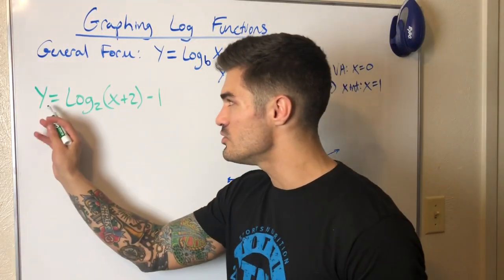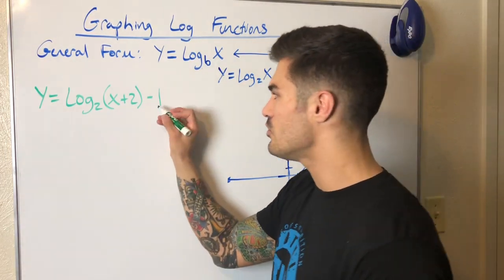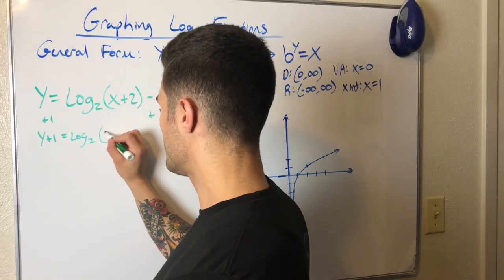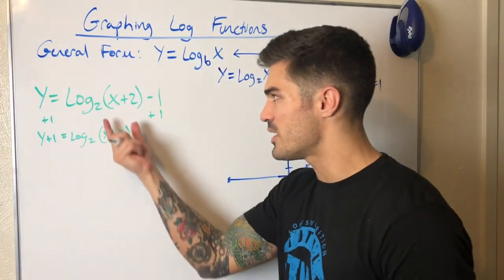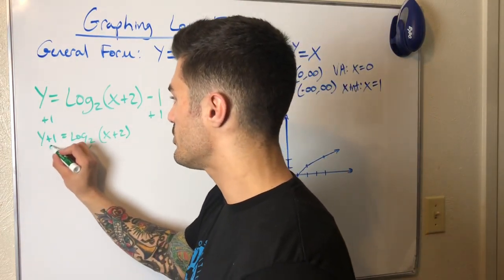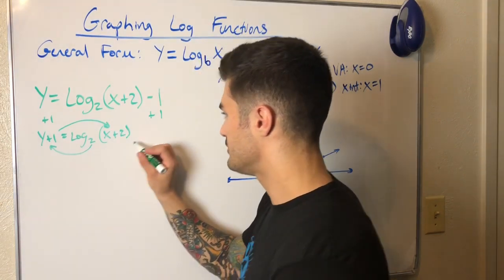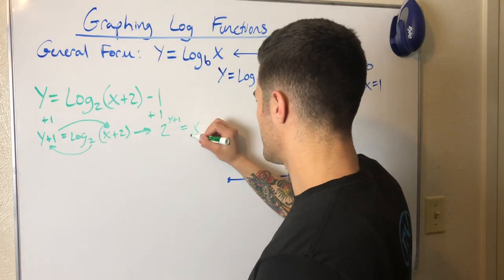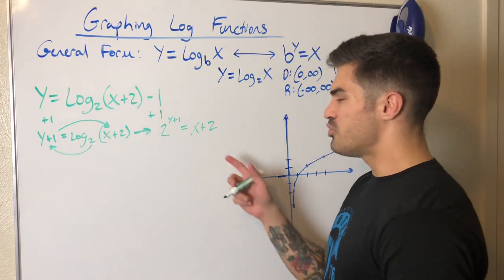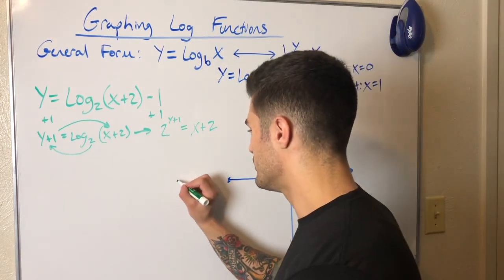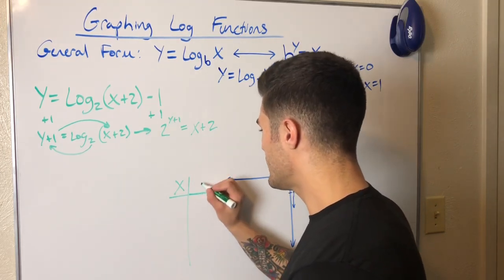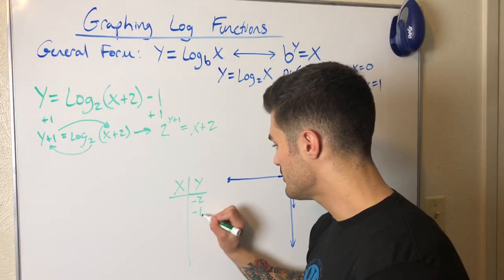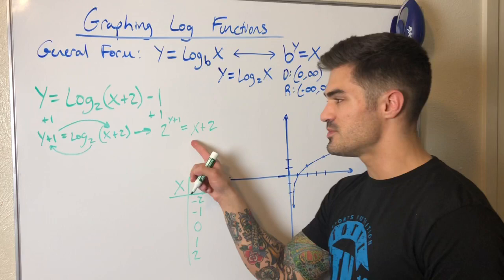Let's graph y equals log base 2 of (x plus 2) minus 1. Before converting, I need to isolate the log. I'll add one to both sides: y plus one equals log base 2 of (x plus 2). Now I can rewrite in exponential form: 2 to the power of (y plus 1) equals x plus 2. I'll draw my table with x and y. Since y is in the exponent, I'll plug in for y and find x values.